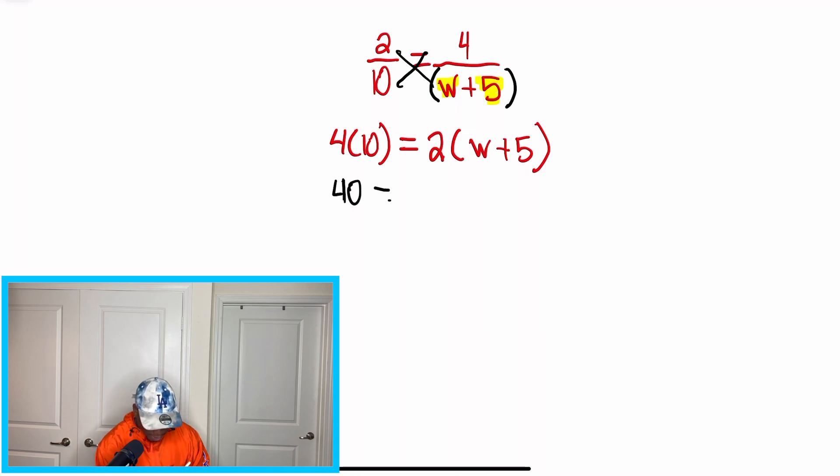Now we go through, we start solving. So we have 40 is equal to, and now we're going to distribute. We'll multiply 2 times W to get 2W, and then we'll go back and do 2 times 5 to get 10. And now, what we want to do is we're going to simplify our equation. We want to combine our like terms.